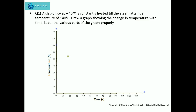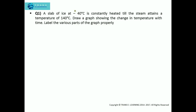Here is the question. A slab of ice at minus 40 degree Celsius is constantly heated till the steam attains a temperature of 140 degree Celsius. Draw a graph showing the change in temperature with time. Label the various parts of the graph properly.